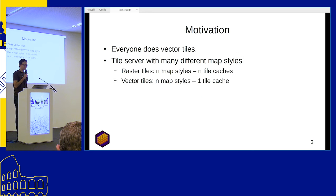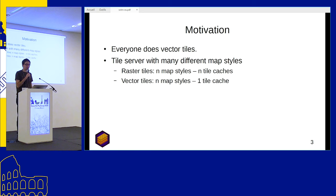First, the motivation. Everyone does vector tiles now, so we at Geofabrik also asked: how should we do vector tiles? How should we produce them and how should we use them? Because operating a tile server with many different map styles for clients — because clients want individual map styles — is difficult with raster tiles. You have N map styles, you will need N tile caches.